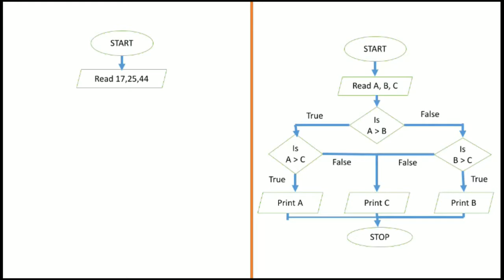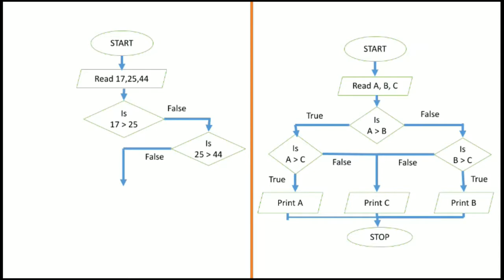Now we take another example. Suppose 17, 25, and 44 are the 3 numbers. First, we compare A with B: is 17 greater than 25? No, it is not true. So now we compare B with C: is 25 greater than 44? No, it is not true — the condition is false. So the largest number is C, that is 44.